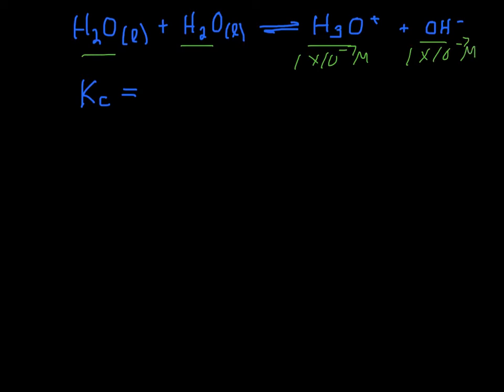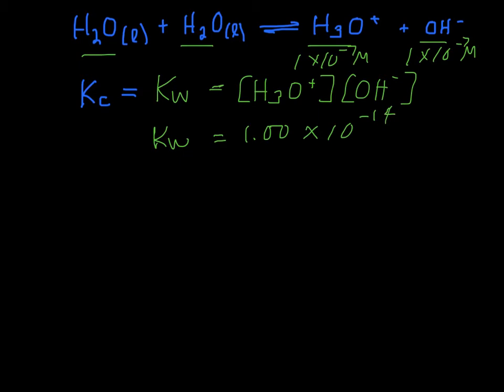So we can draw Kc for this. In this case we call it Kw, the K for water. And it's the concentration of hydronium ion times the concentration of hydroxide ion. And you'll notice that if I plug in 1 times 10 to the minus 7 times 1 times 10 to the minus 7, Kw is a constant. And it is 1.00 times 10 to the minus 14, as long as you're at 25 degrees Celsius. So this is kind of a handy equation that we're going to be able to use.